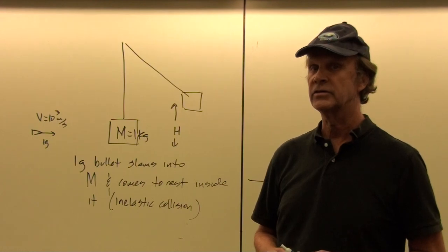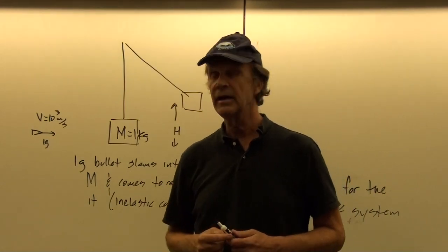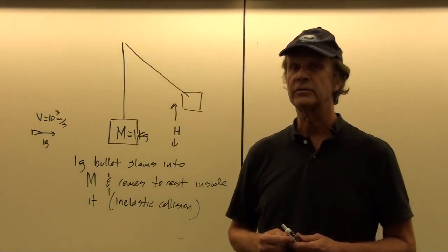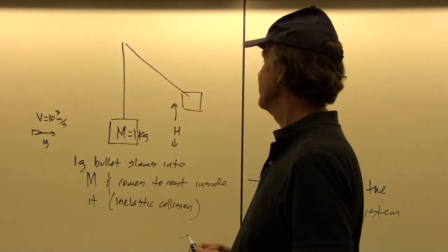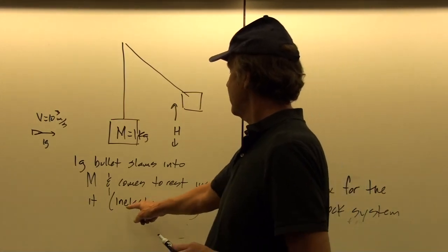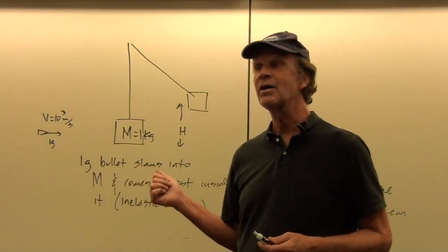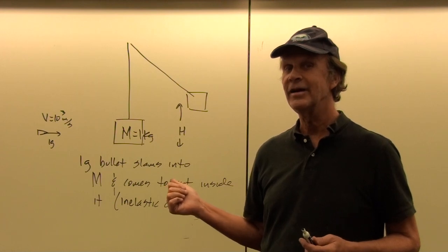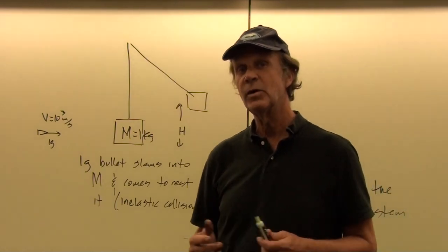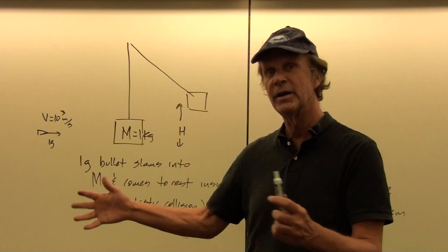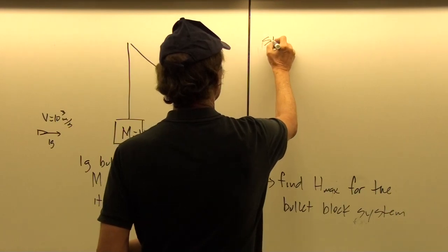One of the biggest mistakes is to say that the initial kinetic energy of the bullet equals the final potential energy and use conservation of energy all the way through. That gives about a factor-of-a-thousand error, because in this inelastic collision we're going to lose almost all of the energy. The momentum is still the same before and after, because you can't lose momentum to heat. So we want to use momentum conservation during the collision.